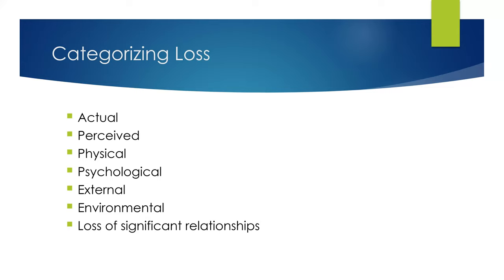External losses are losses of objects with sentimental or monetary value, such as jewelry or a home. Environmental loss involves a change in the familiar environment, even if the change is perceived as positive — for example, moving to a new home, getting a new job, or going to college. Loss of a significant relationship includes the loss of a spouse, sibling, family member, or significant other through death, divorce, or separation.